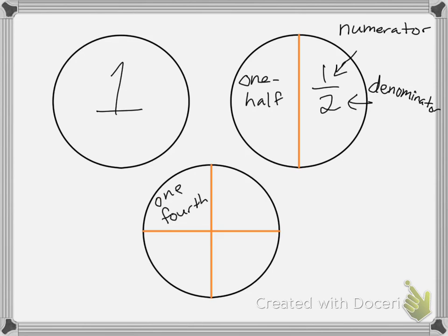I can also write that as one over four. So remember, the bottom number tells me how many pieces I have in the whole, the denominator. I write one fourth with a one in the numerator and a four in the denominator, because I have four equal pieces.